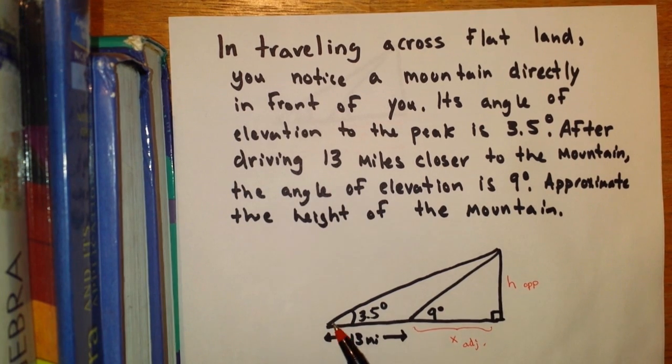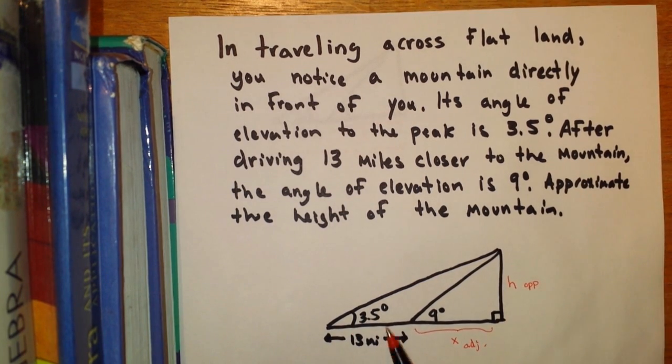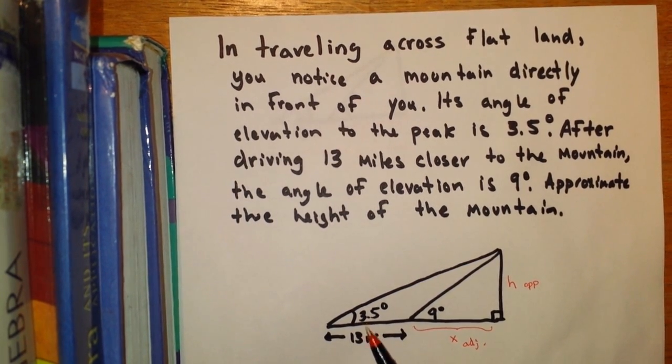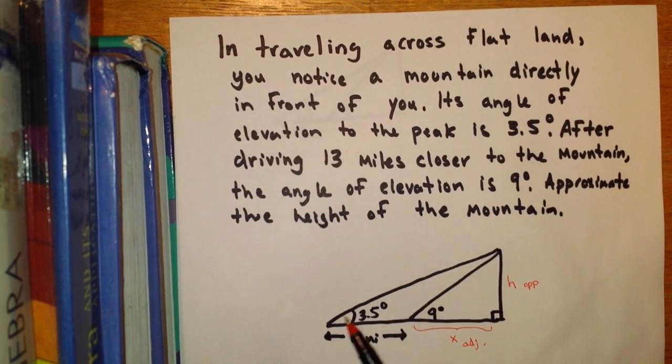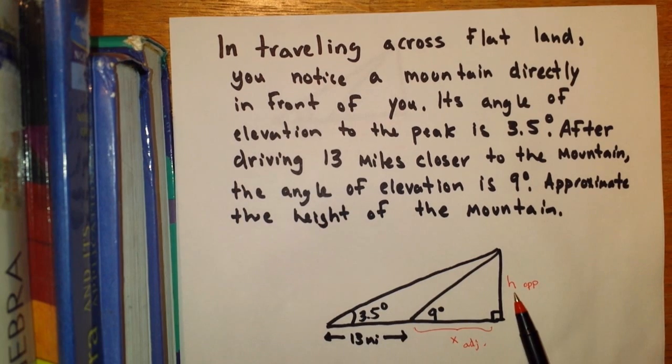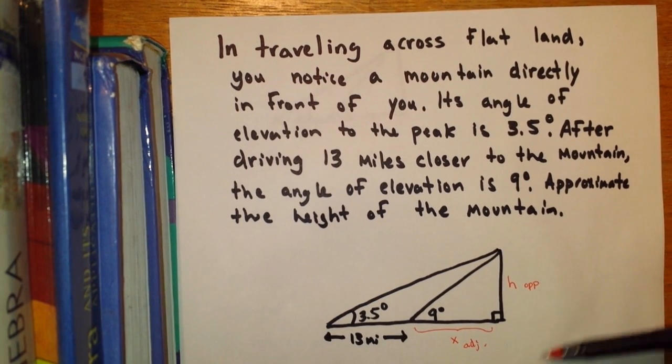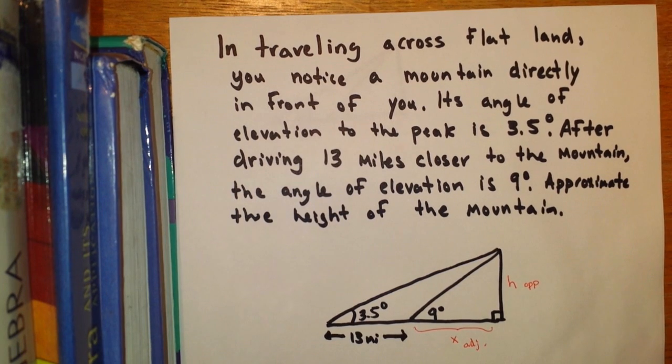We also have a much larger right triangle in reference to the 3.5 degree elevation. So the opposite leg of the large right triangle is still H and the adjacent leg of this right triangle is 13 plus X. To solve this question, we're going to write two trig functions and then use a system of equations.